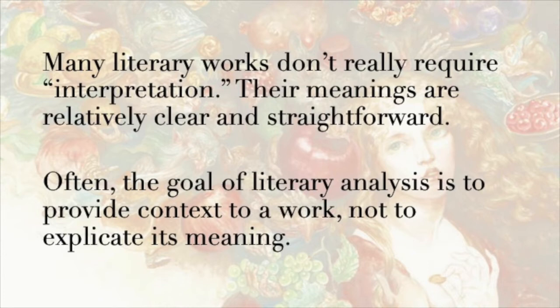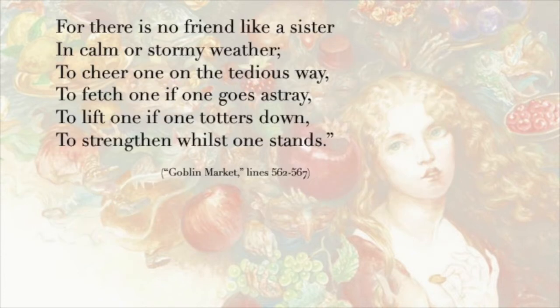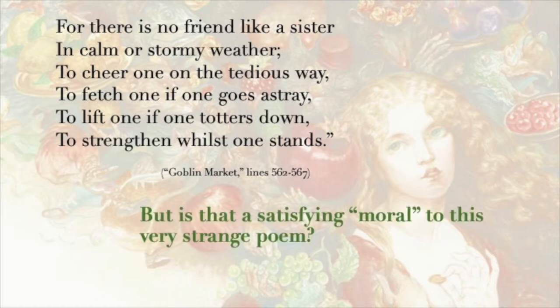Partly because the interpretation that the poem itself seems to offer is pretty unsatisfying for many readers. The last six lines of the poem seem to confer some kind of meaning when the narrator says, 'For there is no friend like a sister, in calm or stormy weather, to cheer one on the tedious way, to fetch one if one goes astray, to lift one if one totters down, to strengthen whilst one stands.' There's no friend like a sister is a nice moral, I guess, but the idea of Rossetti writing this very odd poem about goblins just to make the point that it's nice to have a sister doesn't ring very true — or more importantly, it hasn't rung very true for critics and other readers of the poem. I want to talk about a few of these interpretations, and then talk about the idea of interpretation in general and how we should think about these different critics' ideas.